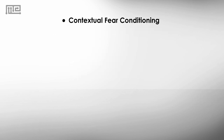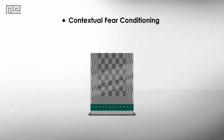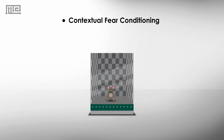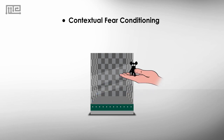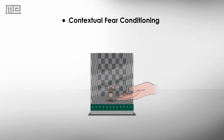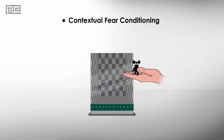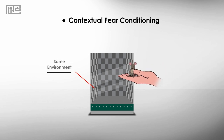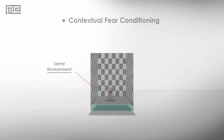Contextual fear conditioning occurs when an animal, placed in a new environment, is presented with an aversive stimulus and then removed from that environment. If the animal has learned the association between the environment and the aversive stimulus, it will freeze upon returning to the same environment.